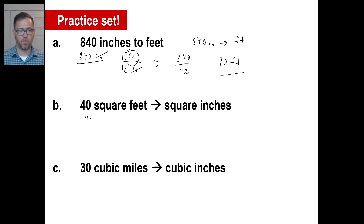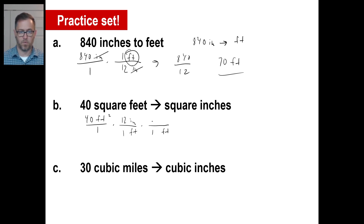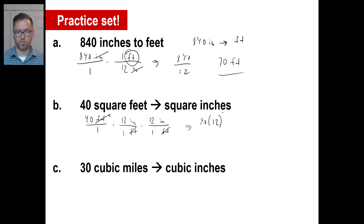Let's do B. 40 square feet. Write a little two there. That tells you you're going to have to have two fractions, both with the unit feet, so they cancel. One foot is 12 inches, one foot is 12 inches. Two feet cancel, feet times feet there. Write 40 times 12 squared — that's 144 times 40, which is 57,600. And you have inch times inch, which is a square inch: 57,600 square inches.